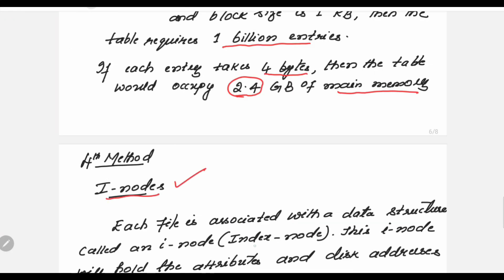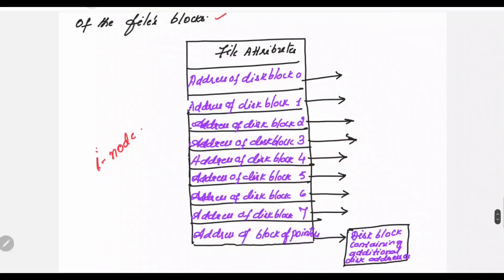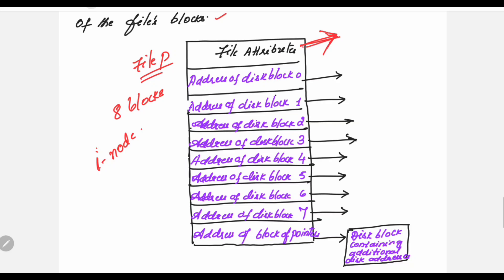The fourth method is the inode method. Inode stands for index node. In this method, each file is associated with a data structure called an inode. This inode holds the attributes and disk addresses of the file's blocks. For a file P having 8 blocks, the addresses of each block are stored in the inode. The starting part of the inode stores the file's attributes: the name, size, creation date, owner, last modification time, and permissions.